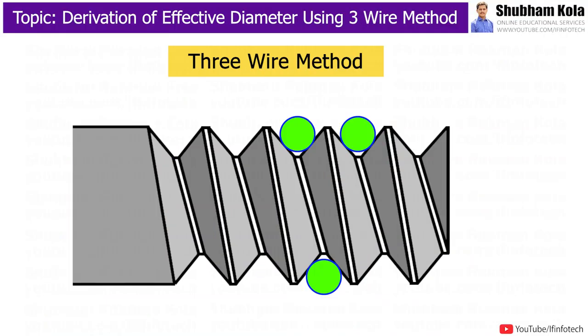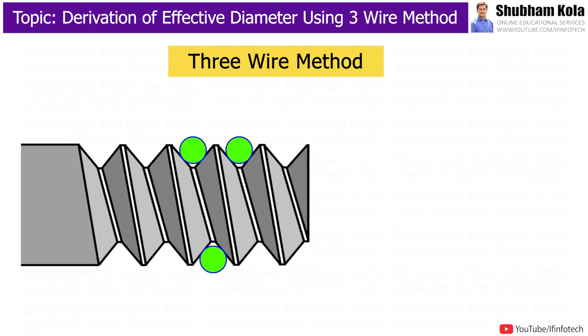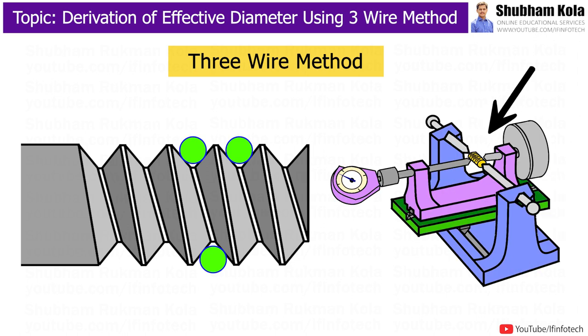In this video, we are going to discuss the derivation of effective diameter using the 3-wire method. In this method, 3 wires of known diameter are used. We have two wires from one side and one wire from the opposite side. The wires are hung from a stand so that the wire can adjust under the grooves.